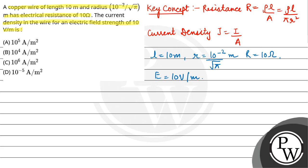So first we calculate the potential difference V. V is equal to E into L. So electric field 10 into length, this gives us 100 volt.